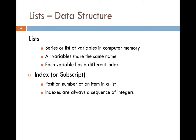An important property of a list is that all variables share the same name, but each variable has a different index. An index is the position number of an item in a list. Indexes are always a sequence of integers — first position, second position, and so on.